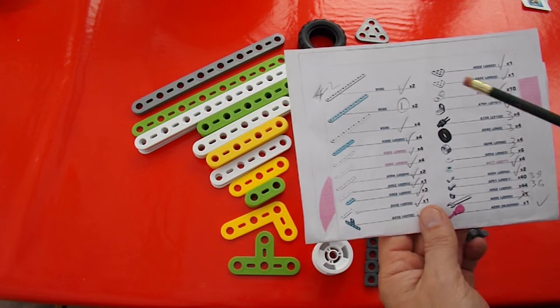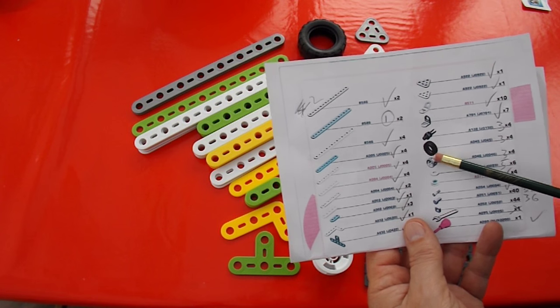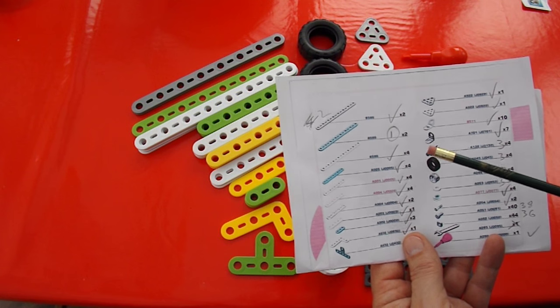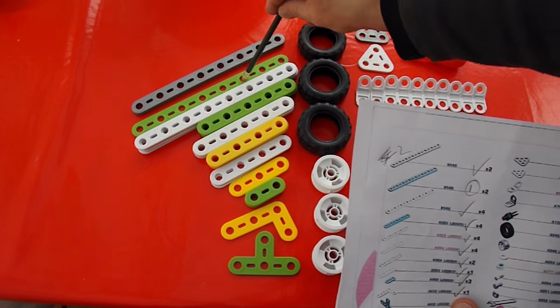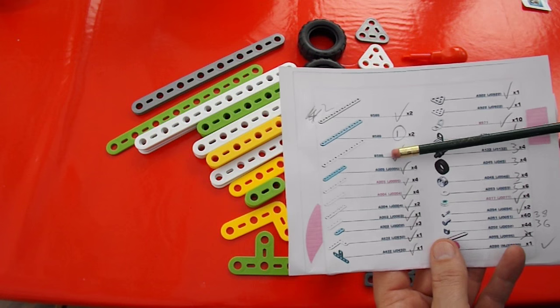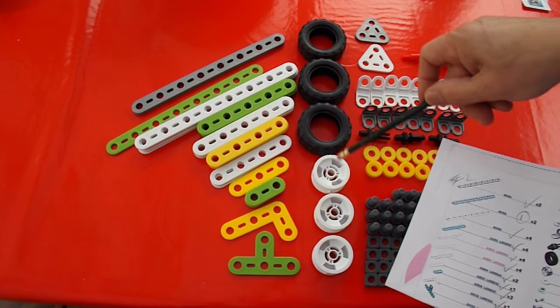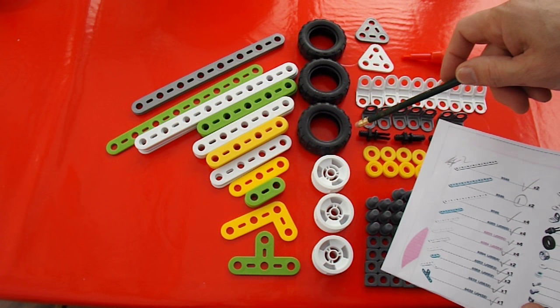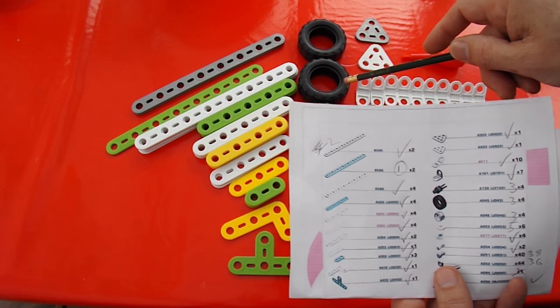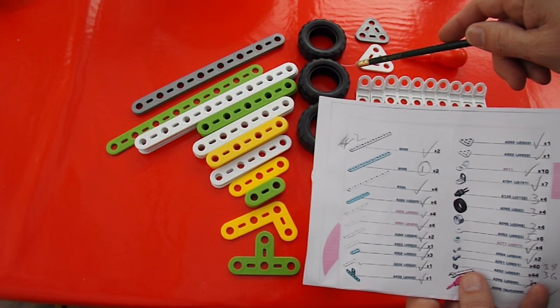Comparing it to the parts list on the instructions, we're not too bad. We're missing one of these green strips, but more importantly we're missing one wheel, so we're a bit stuck if we want to make a four-wheeled car or anything like that.